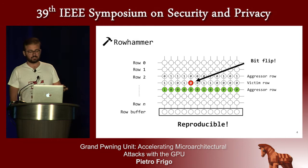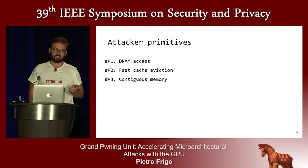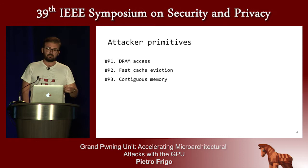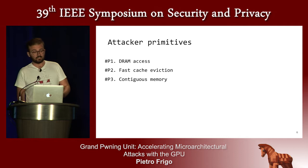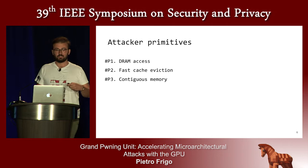To build this kind of attack, we need a bunch of attacker primitives. The primitives we need are: first, DRAM access, because you need to trigger bit flips on DRAM; then you need to bypass the caches to get fast enough access to memory; and finally you need contiguous memory, because you need the two aggressor rows and the victim row in the middle. We'll go through each one and show how to build our end-to-end exploit.